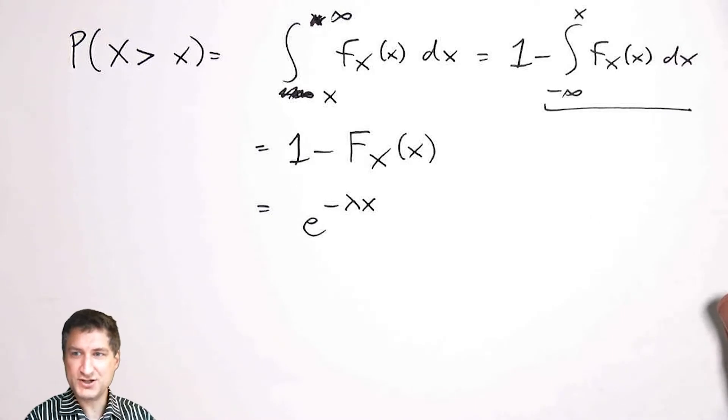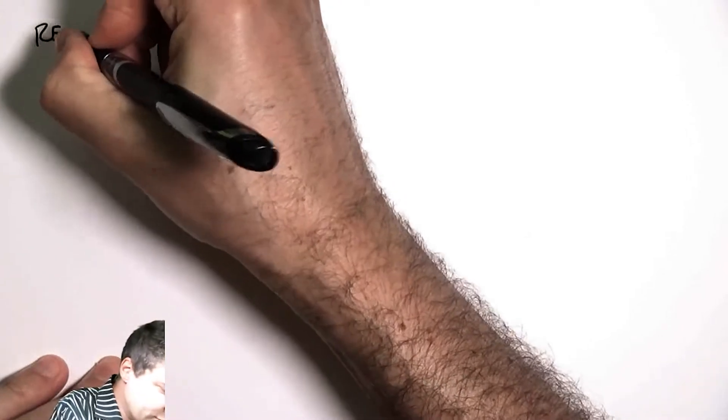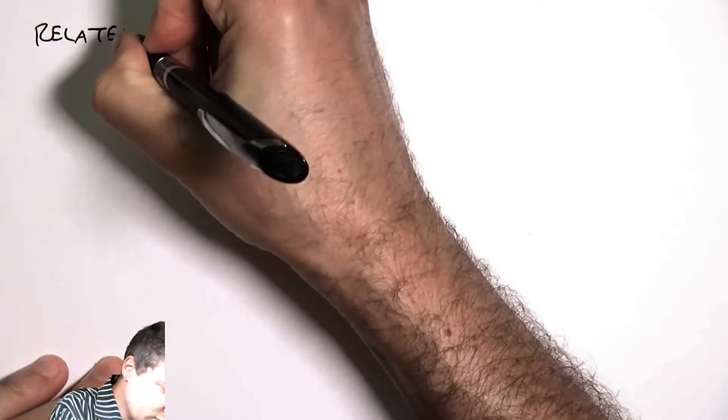A couple things about the exponential random variable I wanted to mention in passing. One is that it actually is related to the Poisson random variable, which is a discrete guy that we talked about a while ago.